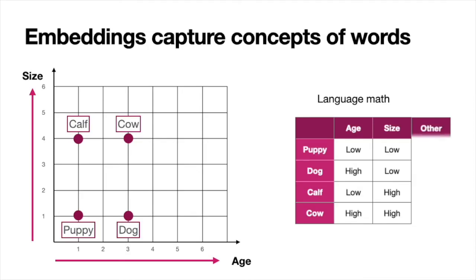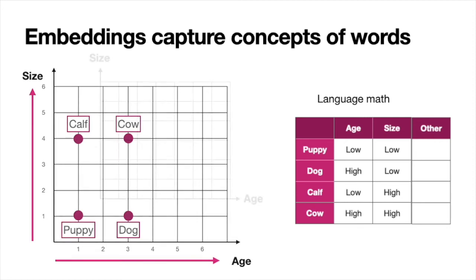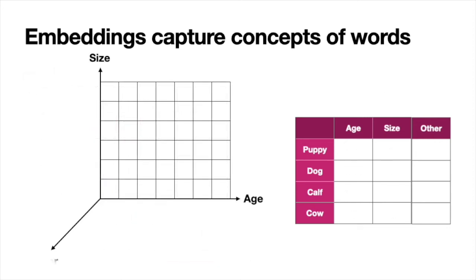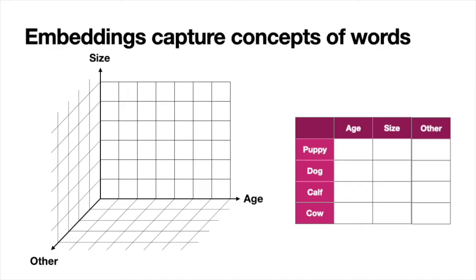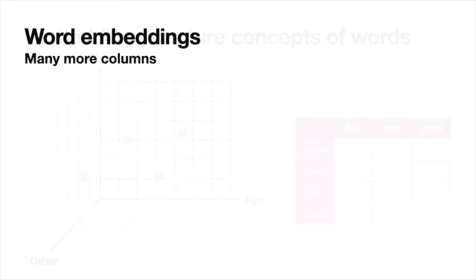What if we have more properties? If a third property came up, geometrically we'd move from two dimensions to three — adding an extra axis to handle the third column. Now our points are no longer in a plane but flying in three-dimensional space. And of course you can continue adding columns to the table. It would be hard to visualize since humans can only see up to three dimensions, but you can have a really, really big table. And that's exactly what a word embedding is.